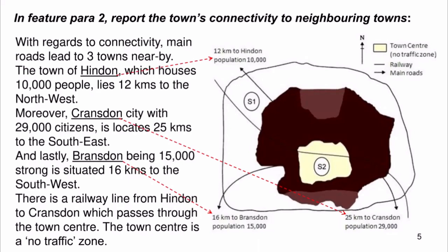In feature para 2, report the town's connectivity to neighboring towns. With regards to connectivity, main roads lead to three nearby towns. The town of Hinden, which houses 10,000 people, lies 12 kilometers to the northwest. Moreover, Cranston city, with 29,000 citizens, is located 25 kilometers to the southeast. And lastly, Bransden, being 15,000 strong, is situated 16 kilometers to the southwest. There is a railway line from Hinden to Cranston, which passes through the town center.